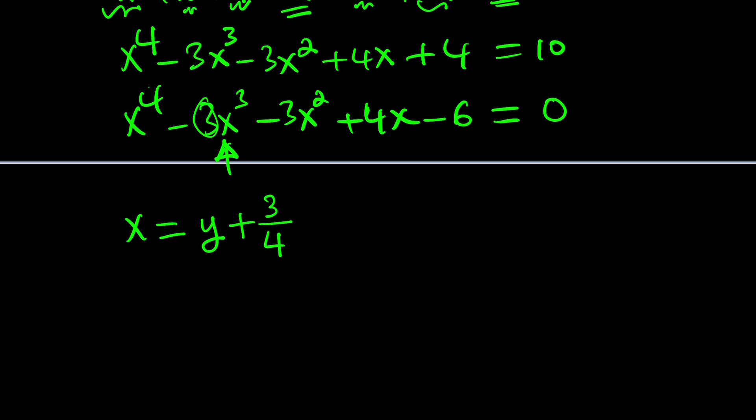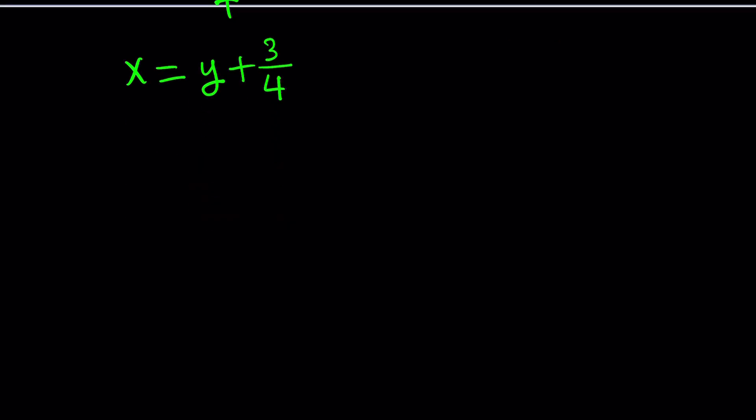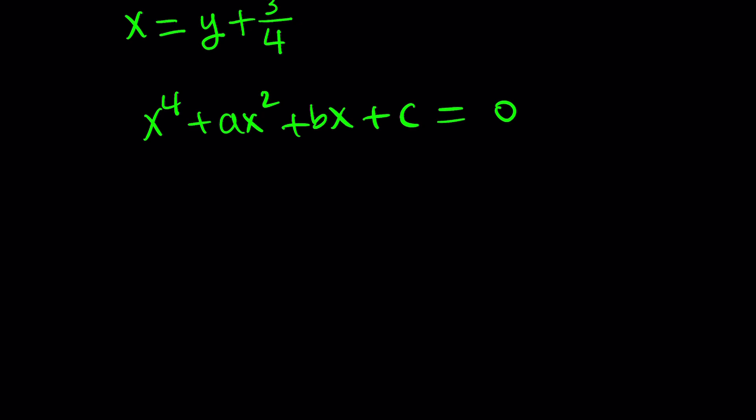So if you replace x with y plus 3 fourths, you'll get rid of the cubic term. And you're going to end up with a quartic like this. Let's just say after doing the manipulations, it's going to look like this. Now, how do you solve a quartic like this?